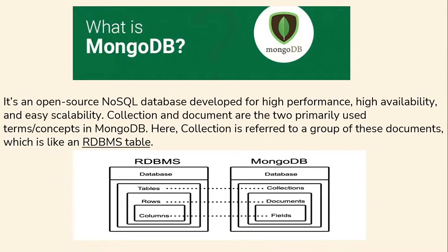So what is MongoDB? MongoDB is an open source and useful database developed for high performance, high availability and easy scalability. Collection and document are the two primary terms and concepts used in MongoDB.